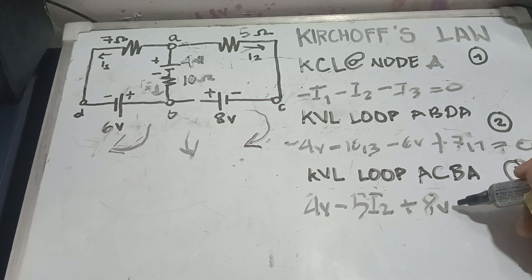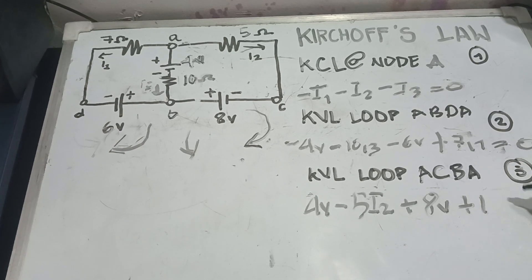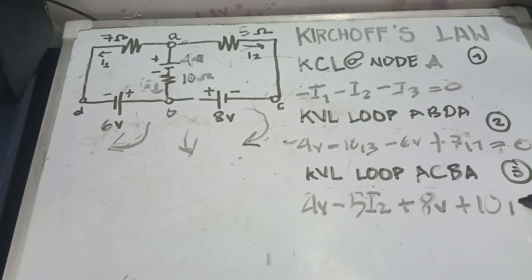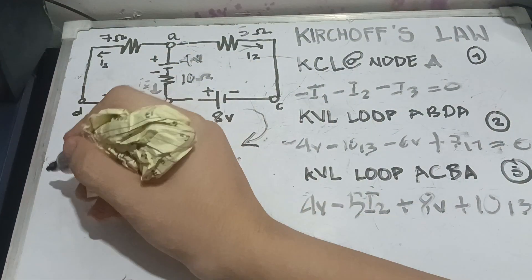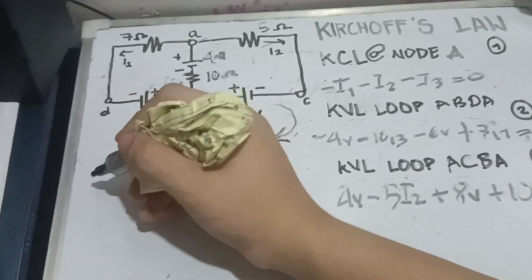Now, we're going to write positive 10 I3 equal to 0. Now, how are we going to use Caltech on this one? We're going to write our own table.